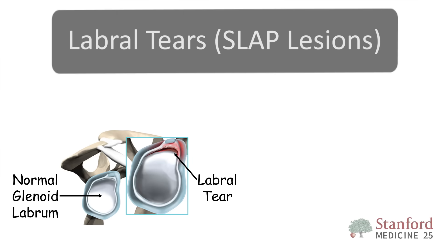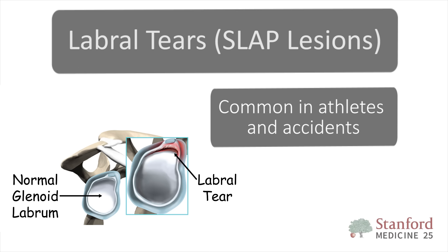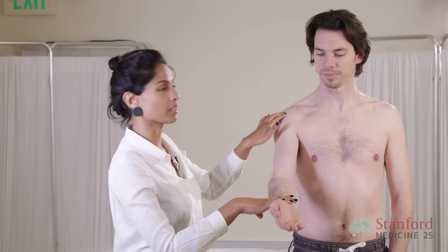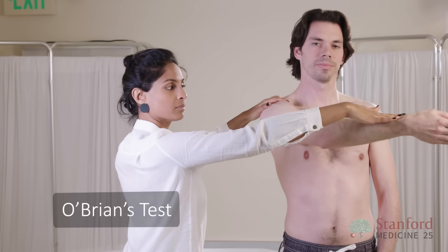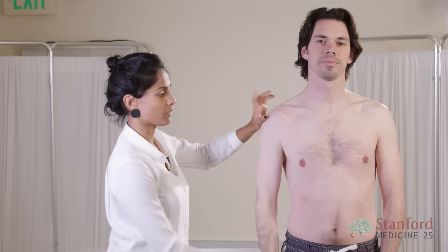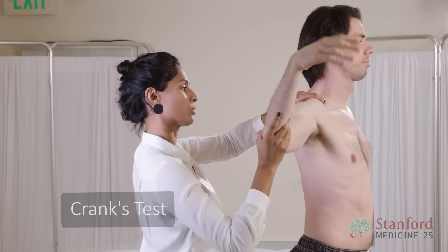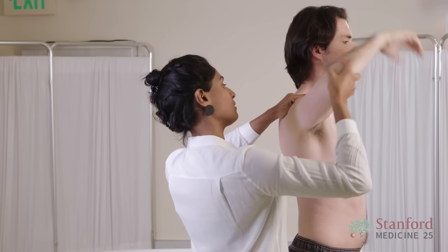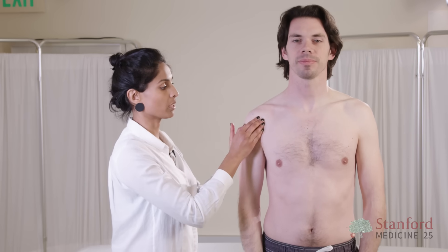Labral tears or SLAP lesions are commonly seen in athletes, maybe as a consequence of dislocations or often seen in motor vehicle accidents when the arm is in the overhead position. The first test for a SLAP lesion is Speed's test, which is the same test we did for biceps tendinopathy, because the biceps inserts at the superior edge of the labrum. O'Brien's test is resistance to me when I press down, and if that's positive it should cause pain. The final test is the crank test, where I'm internally and externally rotating the shoulder trying to cause pain whilst also palpating for clunks. Acute lesions usually present with an anterior joint line fullness and a loss of power on resisted movements.